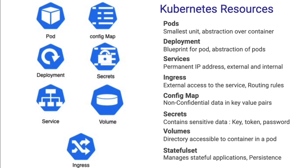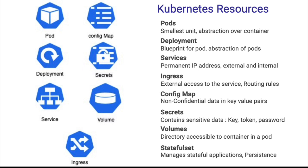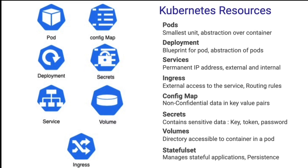Starting with pods — a pod is the smallest unit in Kubernetes. It's an abstraction over containers. In Kubernetes you don't directly deal with containers; you deal with pods, which are just an abstraction over containers. The second concept is deployment. In Kubernetes the smallest unit is a pod, but we don't directly create pods — we create a deployment. Deployment is the blueprint for the pod, and it will automatically create the pod for us.